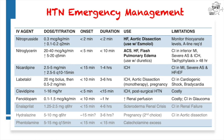Labetalol is a beta blocker and alpha blocker with about a 7 to 1 beta to alpha effect. As a result, it's less effective than the other three agents, but good in very specific circumstances. In intracerebral hemorrhage or subarachnoid hemorrhage, it is first line along with nicardipine. It can be used in aortic dissection as a monotherapy, as it will have an effect on both heart rate and blood pressure, and it is safe to use in pregnancy, which makes it first line.